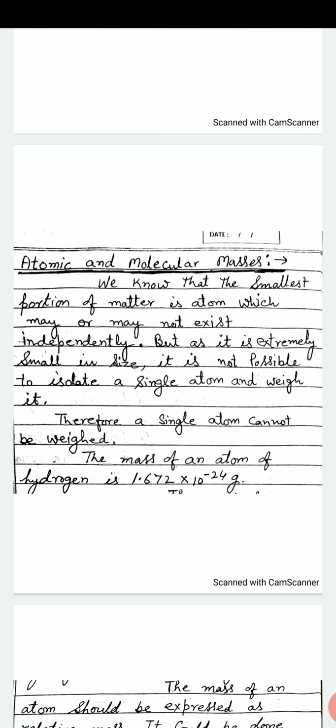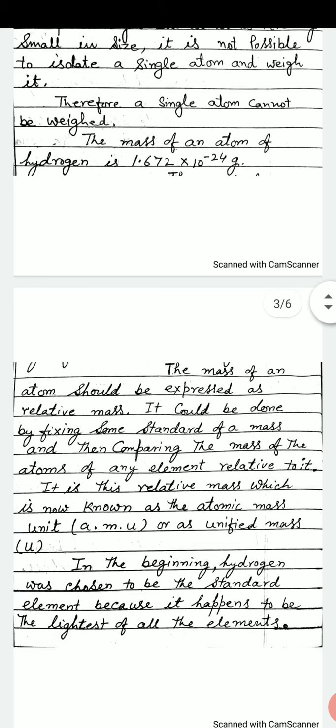The mass of an atom of hydrogen is 1.672 into 10 to the power minus 24 gram.